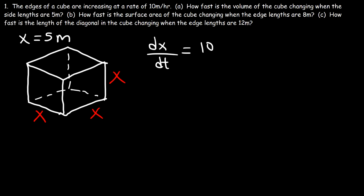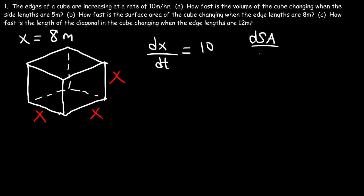Now let's move on to Part B. How fast is the surface area of the cube changing when the edge lengths are 8 meters? So x is no longer 5 but 8 meters. How can we determine the rate at which the surface area is changing — how can we find ds/dt?